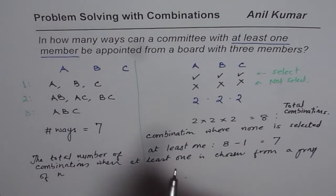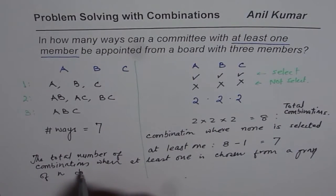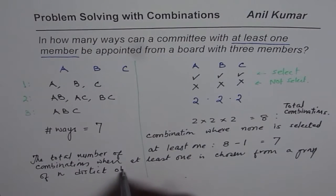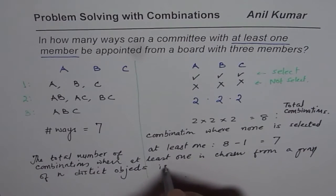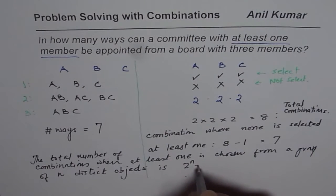when at least one is chosen or selected from a group of N. So again, these should be distinct, no repetition.